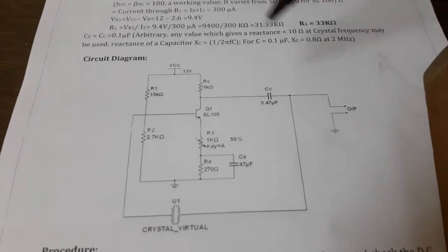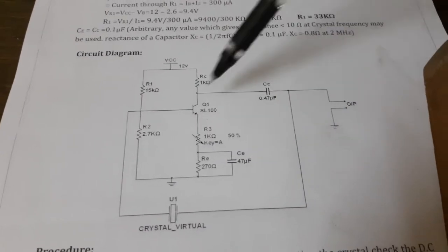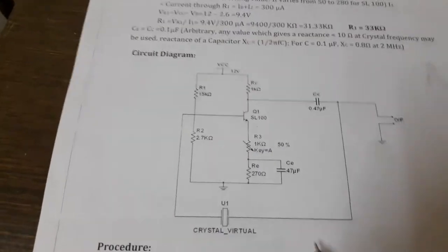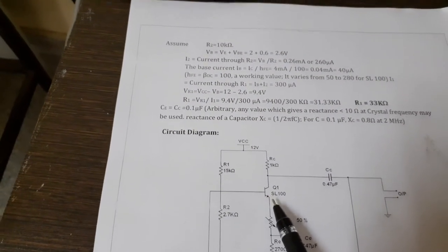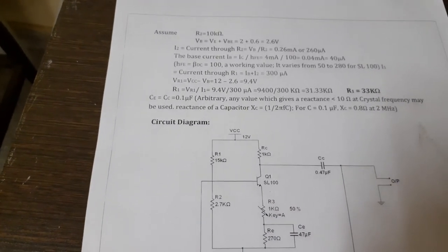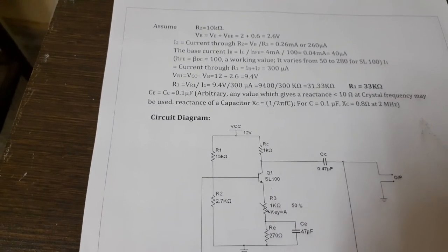But this is all the circuit for crystal oscillator. So you can see you have a transistor SL100 and you have a crystal. Now what is the criteria about it?